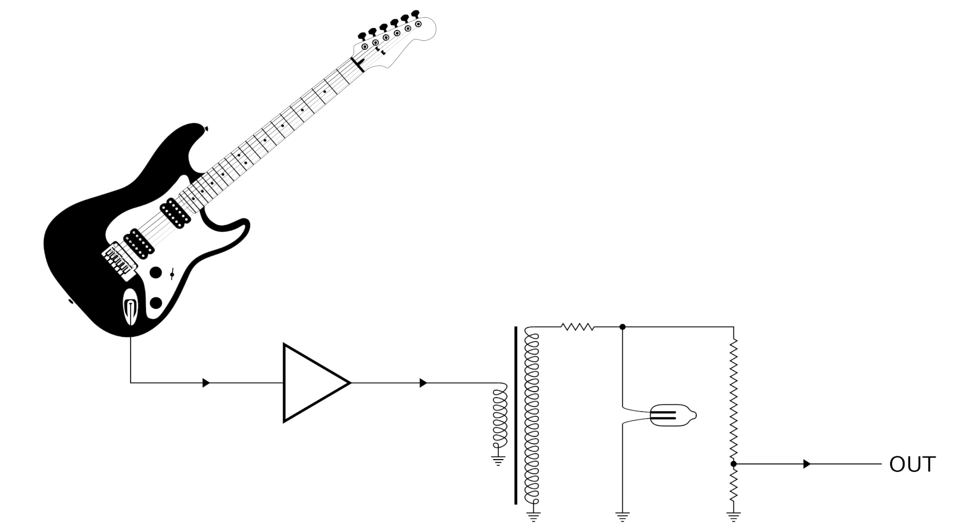And the way this works is it takes your guitar input, amplifies it, and then puts it through a transformer that boosts the voltage way up. Then there's a clipping network with the neon lamp on the bottom and a big voltage divider to bring the voltages back down to audio levels.